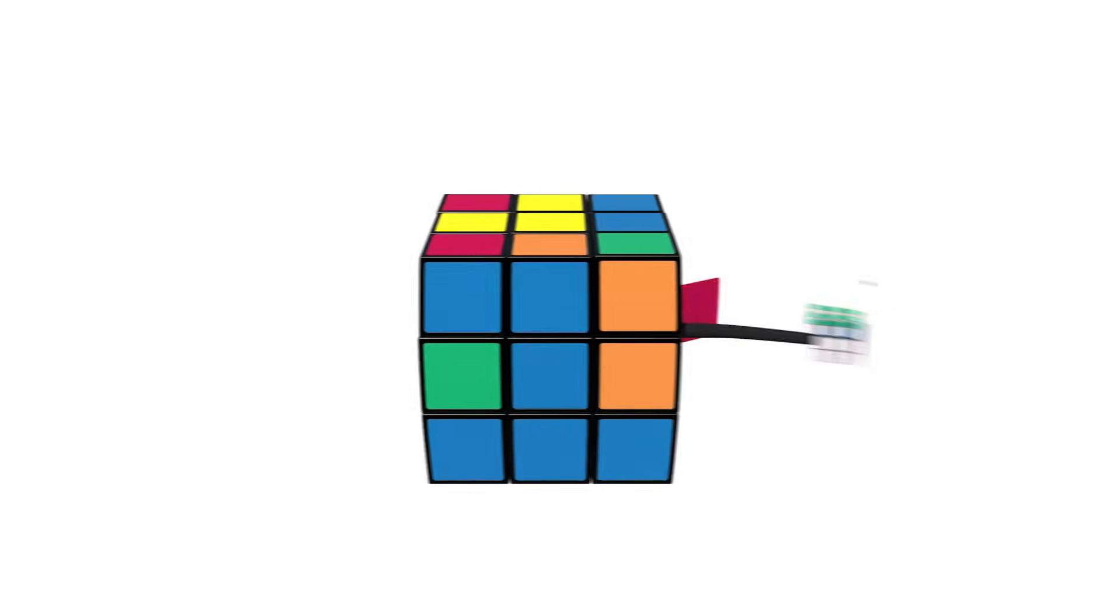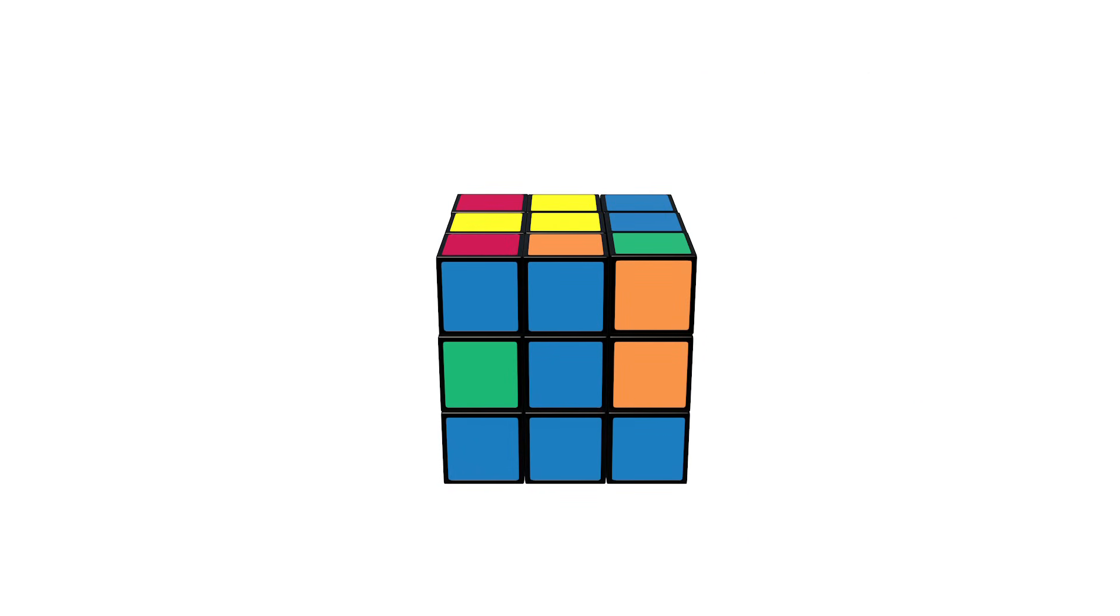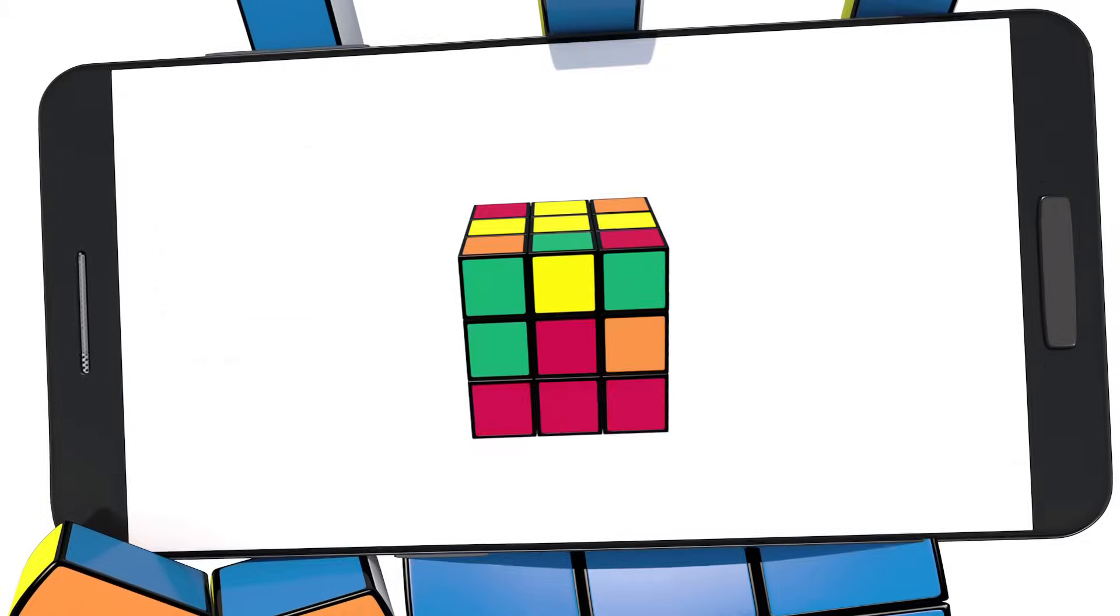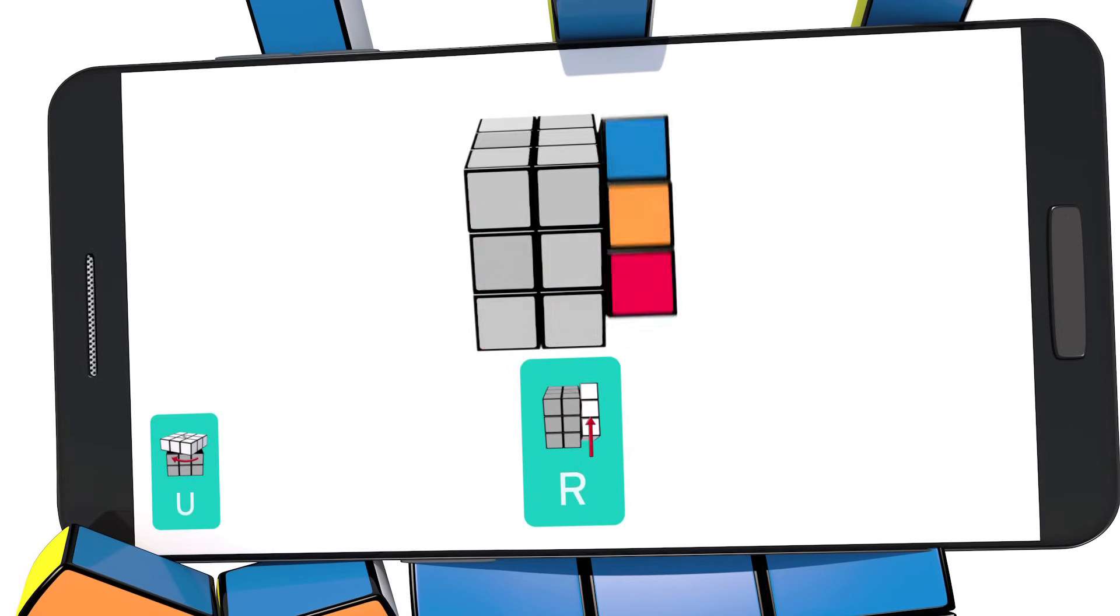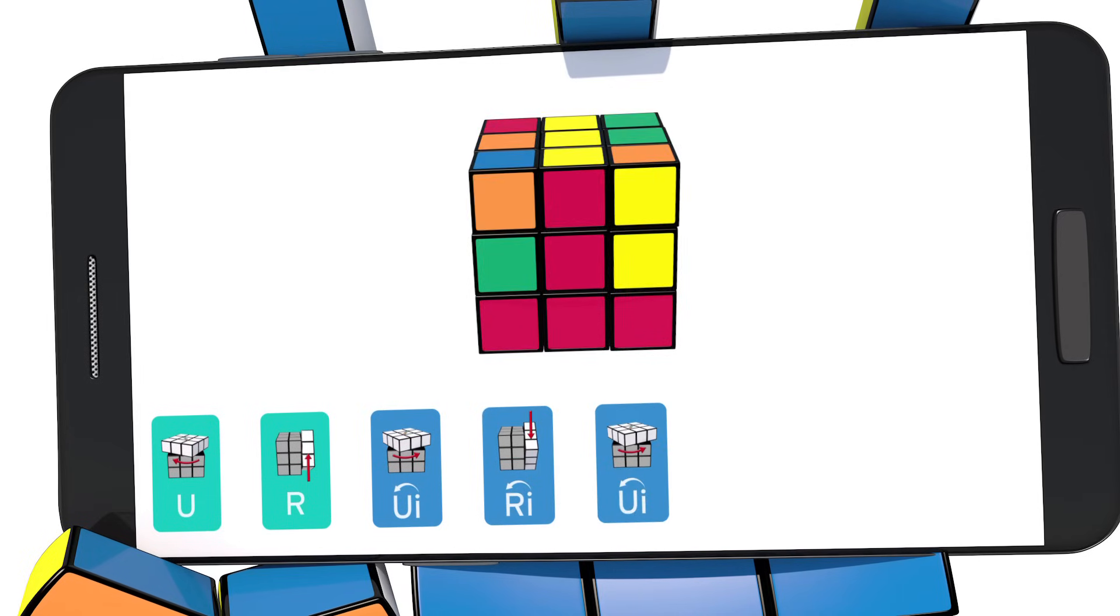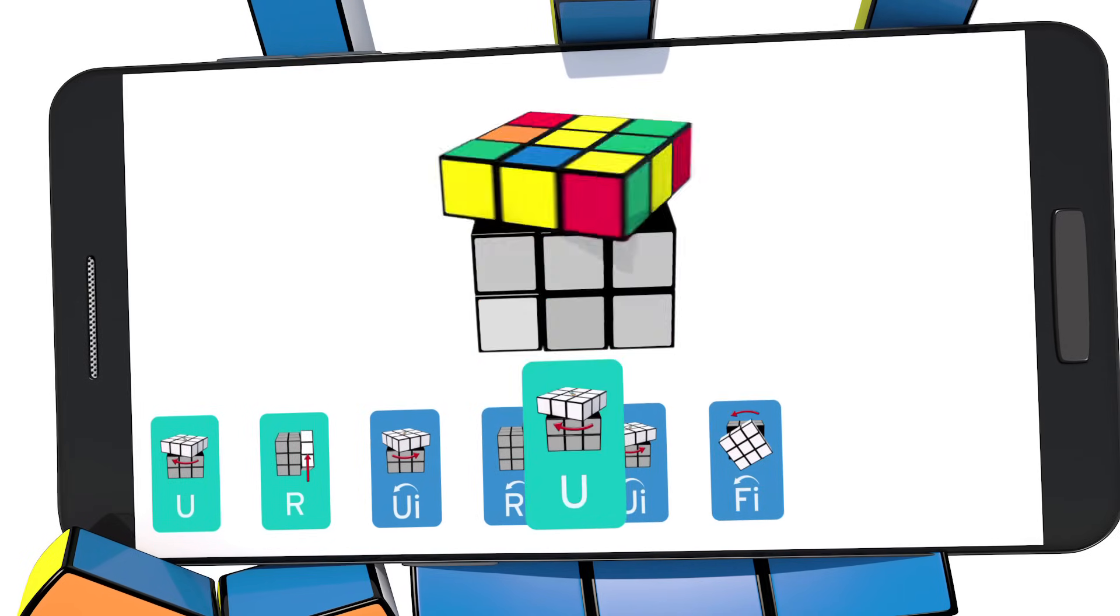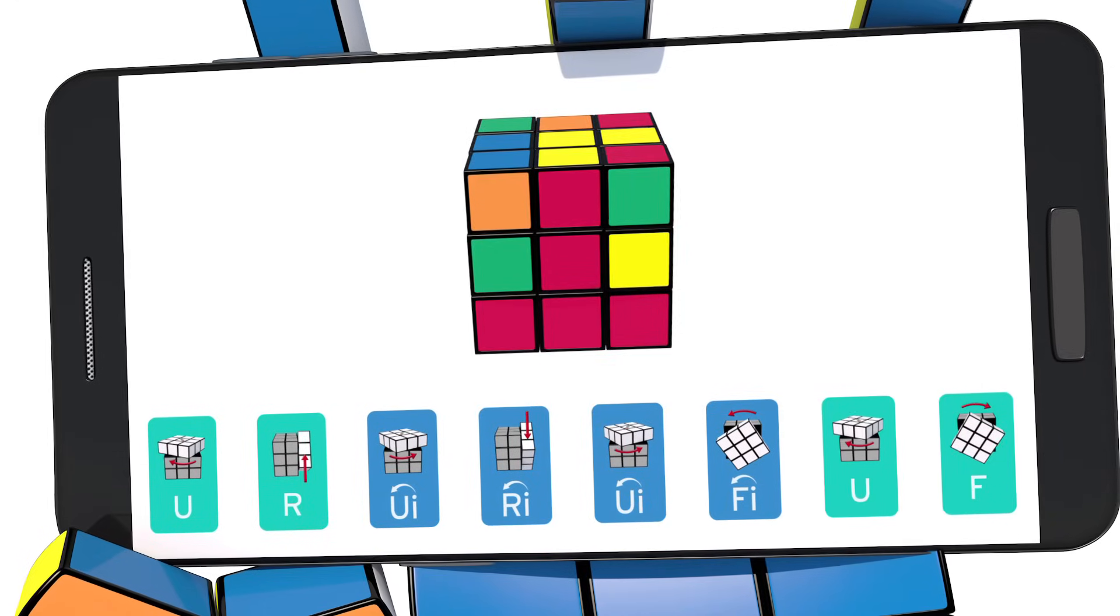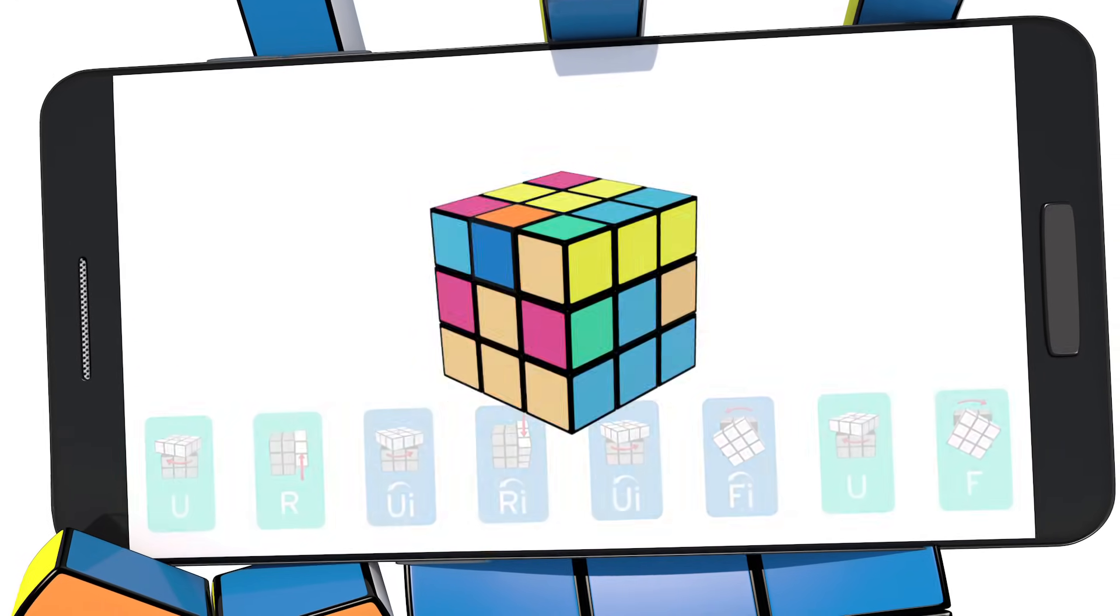Here it is again, just in case. Can I get a rewind? Up, right, up inverted, right inverted, up inverted, front inverted, up, front. This will give you a piece that is not yellow and you can continue.